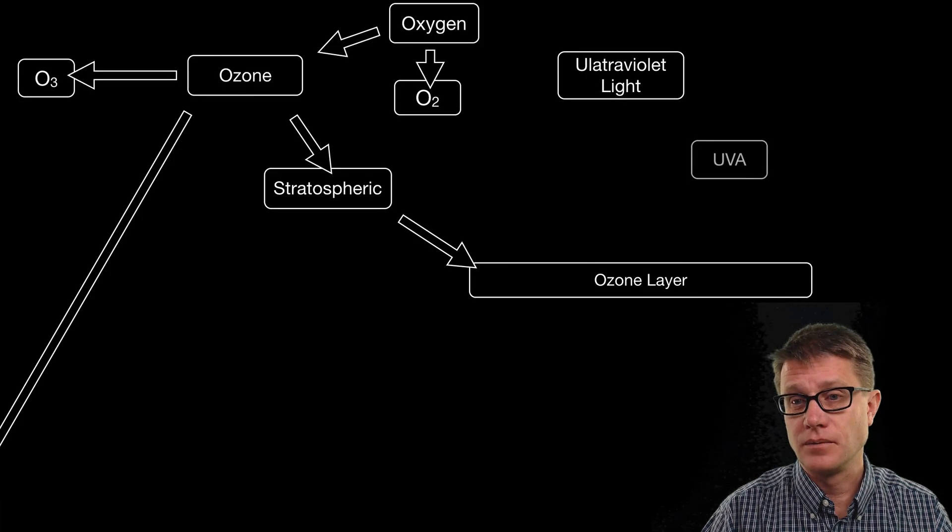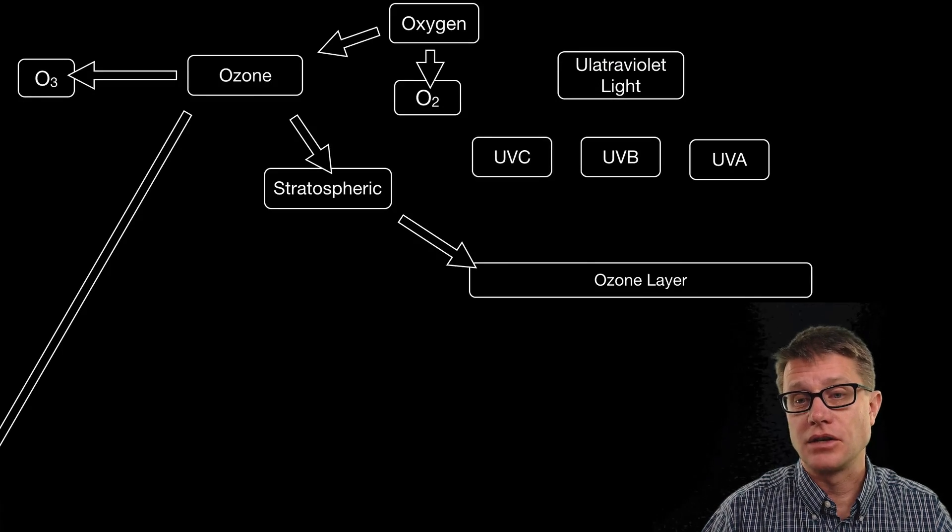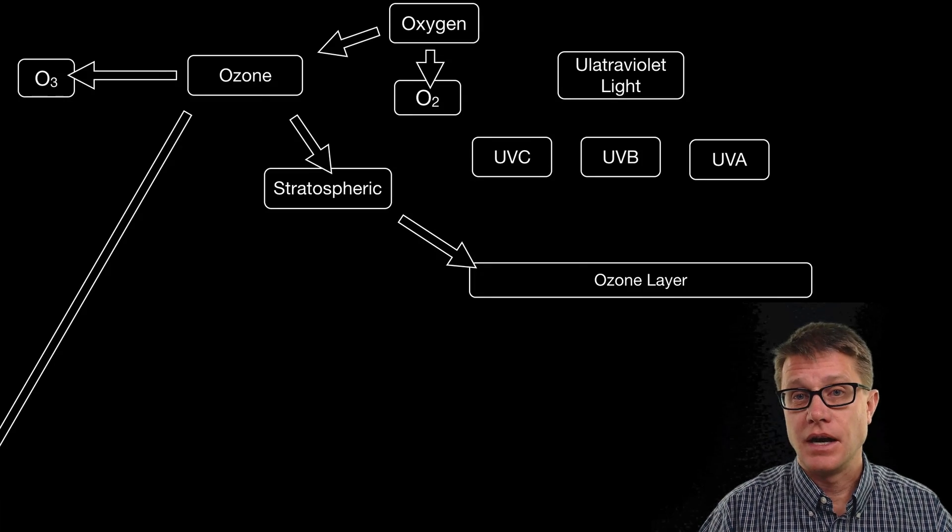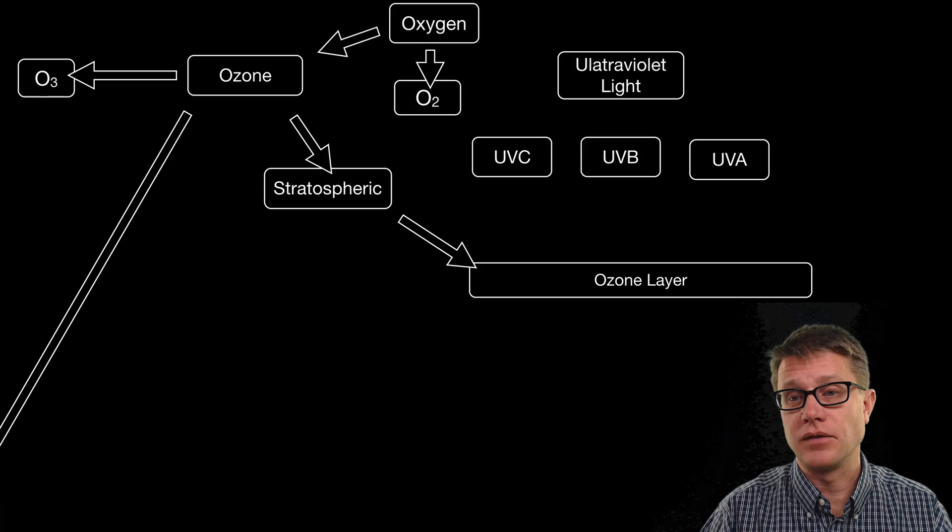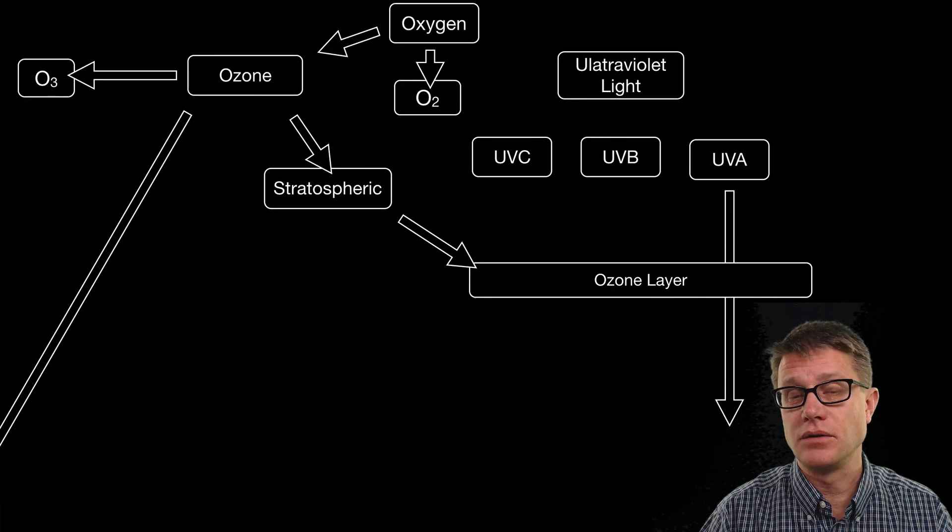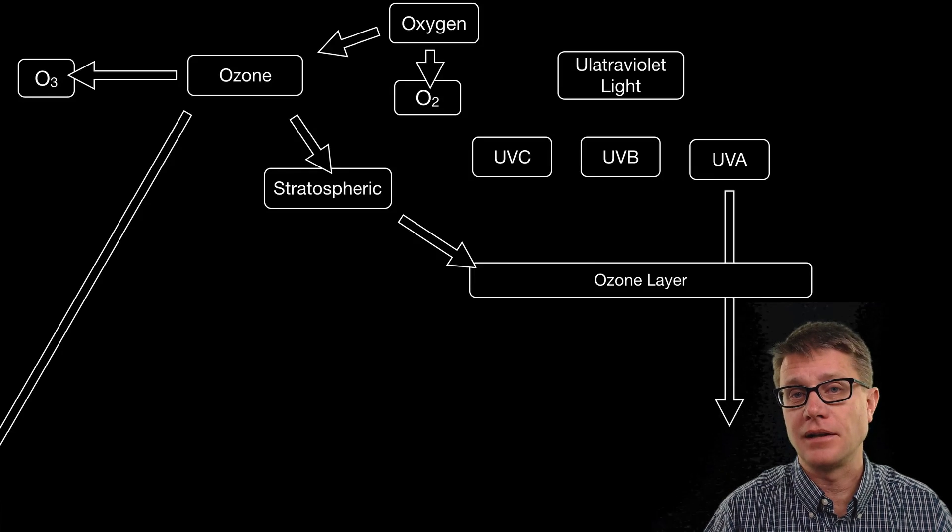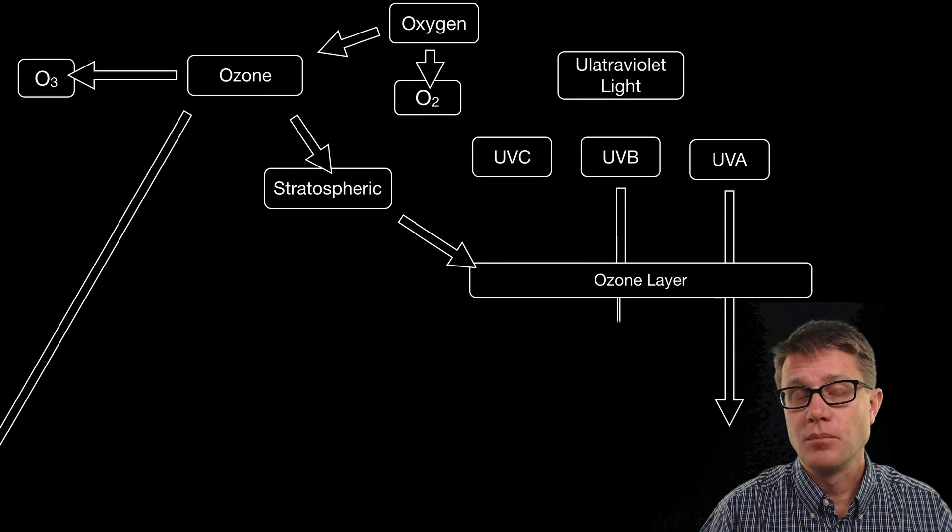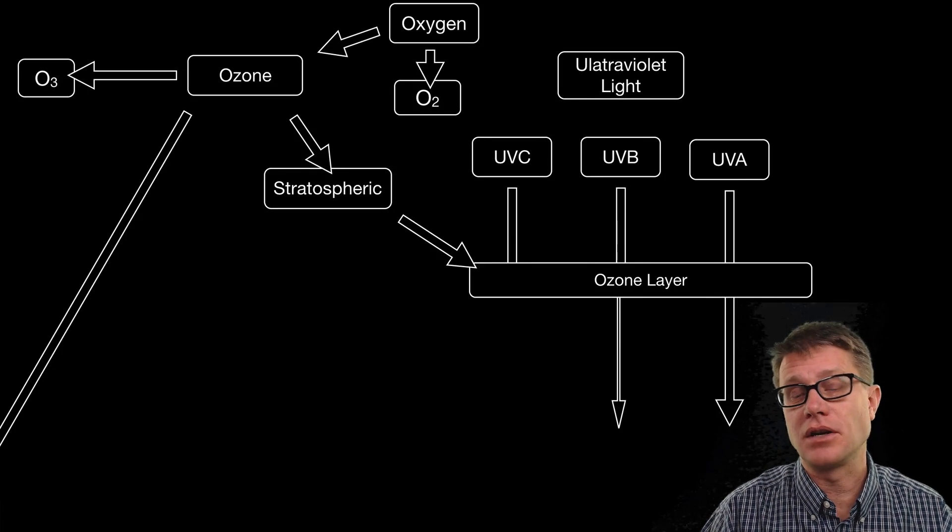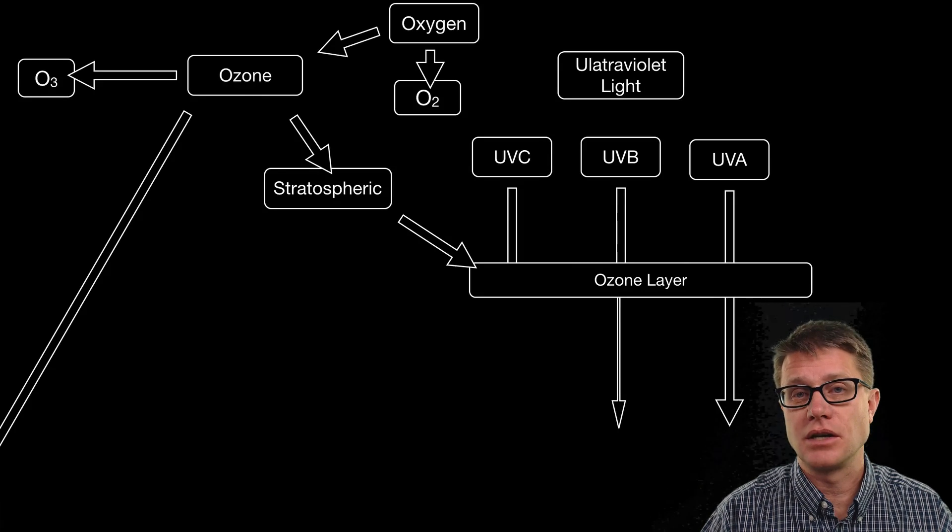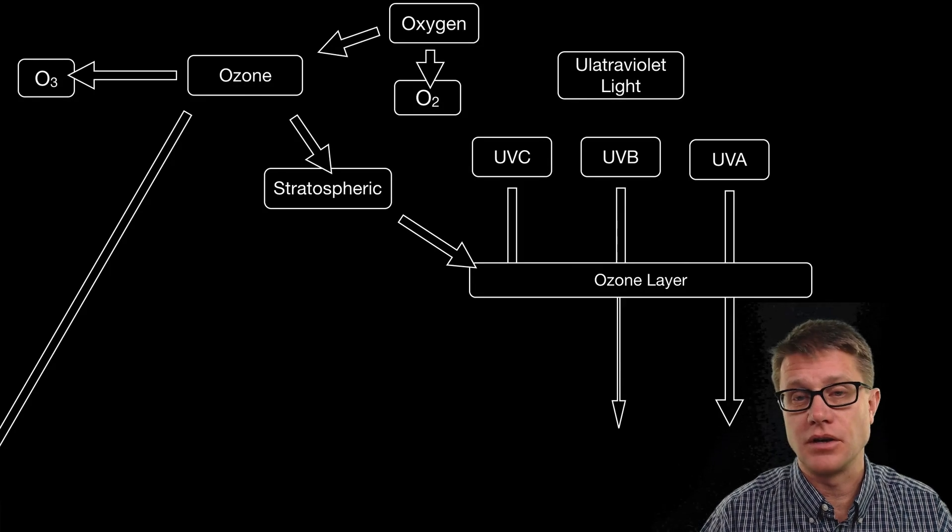Now some of that gets through. That ultraviolet radiation is ordered from A to B to C in ascending energy and also descending wavelength. The UVA radiation moves right through the ozone layer. But this is not too damaging. If you have ever looked at a black light that is UVA radiation. Most of the UVB is filtered out and all of the UVC, the most damaging type of ultraviolet radiation, is filtered out by stratospheric ozone.